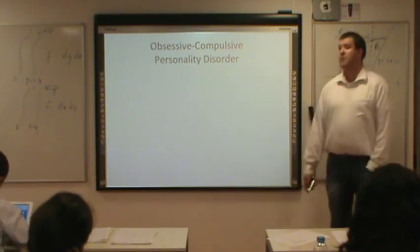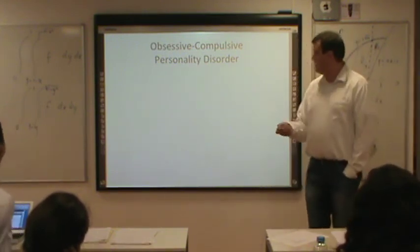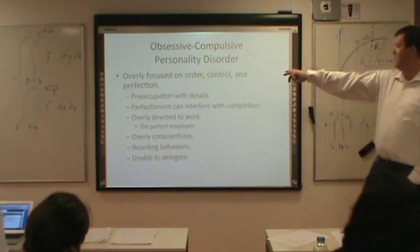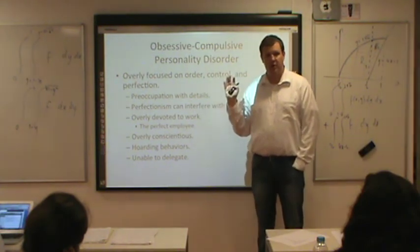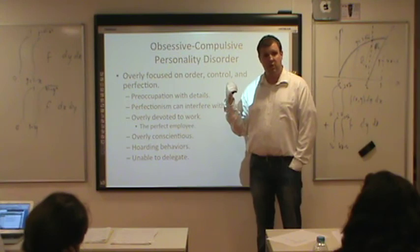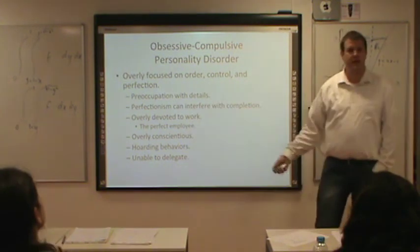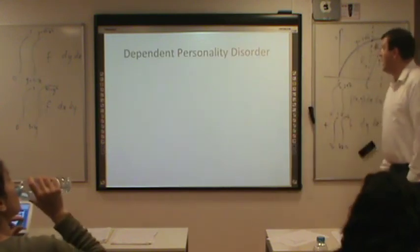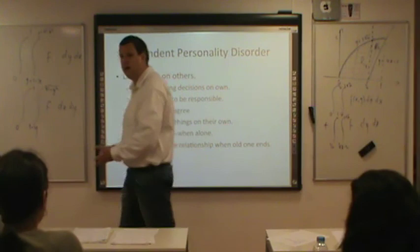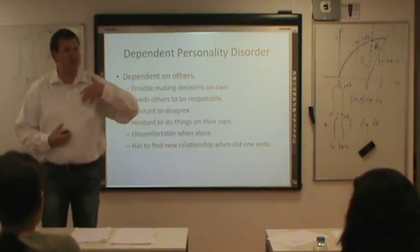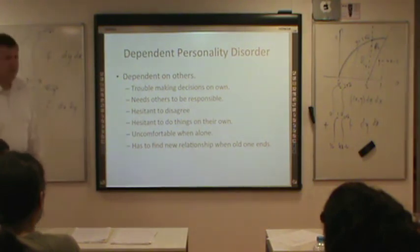People with obsessive-compulsive personality disorder make fantastic employees — if you run a business, hire them because they'll do a good job. But unfortunately, because they're so preoccupied with work and details, they often have very bad family lives. Dependent personality disorder — these people depend a lot on others. If their partner dumps them, they immediately have to find someone else. They don't have their own opinions and often adopt the opinions of others.